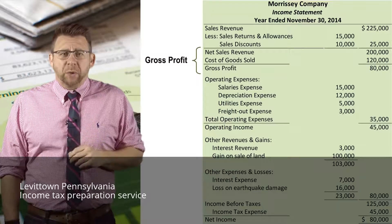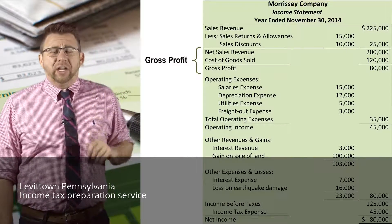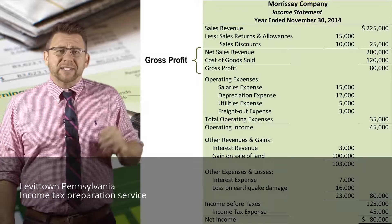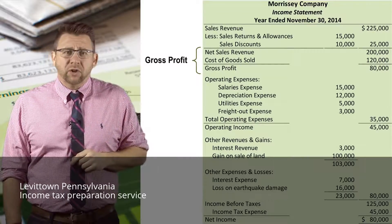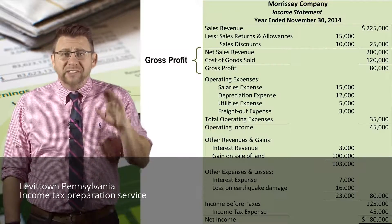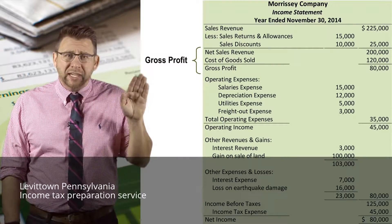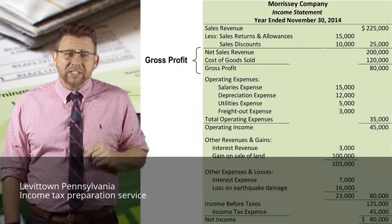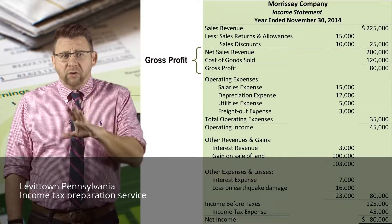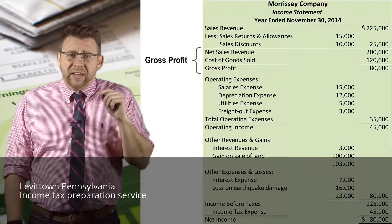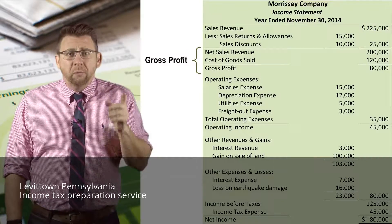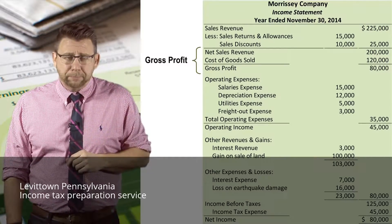The next important subtotal is gross profit. This is calculated by taking net sales revenue minus cost of goods sold. At this point, cost of goods sold is the only expense deducted in this section. Gross profit is the amount that inventory was sold for more than the cost of inventory.